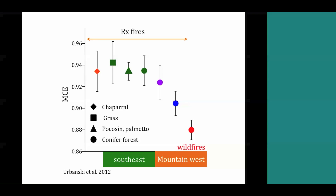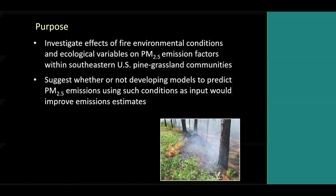We know from past research, like the review by Urbanski et al., that different overall community types have different emission factors. Here's modified combustion efficiency, which is generally inversely related to emission factors. We're up in more of a grassland habitat here — the longleaf pine, shortleaf pine, oak-hickory forests in the southeast are mostly fueled by grass, but also pine needles.